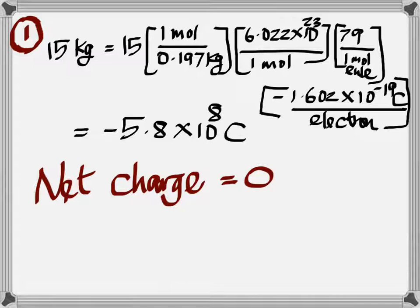It's very obvious from what you see on the screen that one mole is 0.197 kilograms and each mole has 6.022 times 10 to the 23 molecules. And there are 79 electrons for one molecule, and the charge of each electron is that much. So when you do all that, you get the total charge. It's negative 5.8 times 10 to the 8.